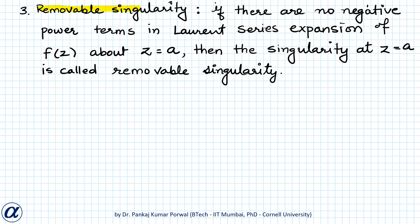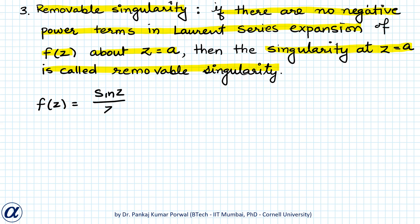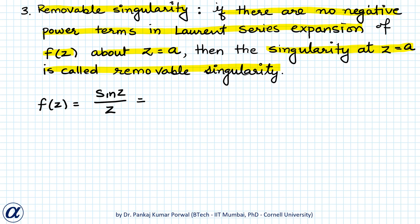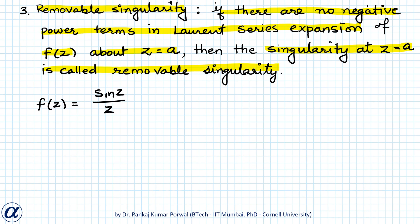Next is removable singularity. If there appears to be a singularity at some point, but when we do the Laurent series expansion there are no negative power terms in the expansion of f(z) about z equals a, then the singularity at z equals a is called a removable singularity. For example, f(z) equals sine z upon z appears to have a singularity at z equals zero because z in the denominator is zero there.